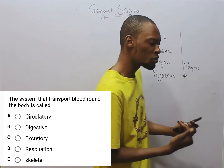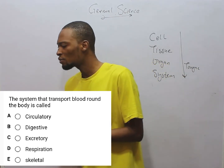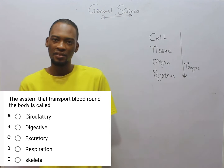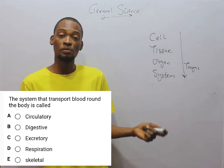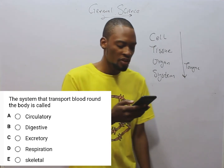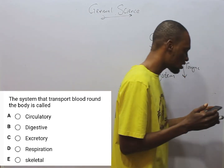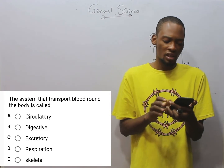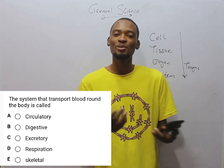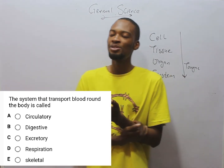The excretory system is the system that helps you remove waste products from the body — not all products in the body are useful forever; once they have served their purpose, they are no longer useful and must be removed. The respiratory system is the system that helps you breathe properly. Out of all these systems, the circulatory system is the one used to transport blood around the body.